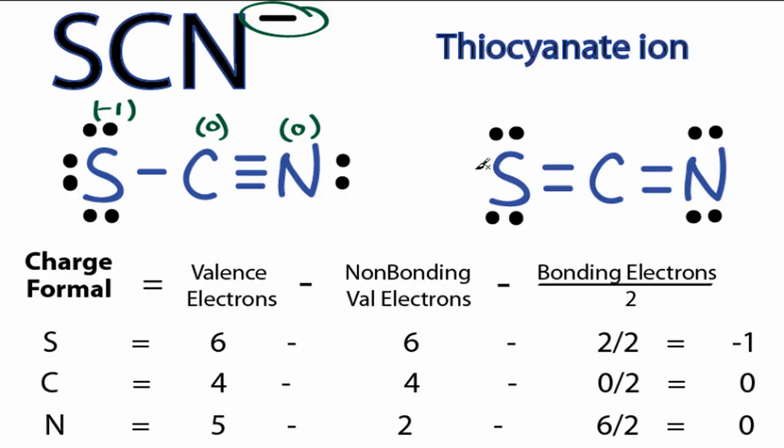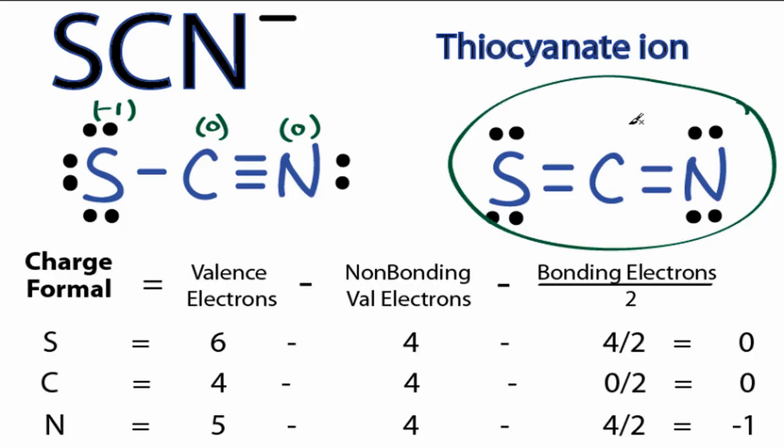Now let's look at the next Lewis structure here for SCN minus and calculate the formal charges. For this Lewis structure, we can see that the sulfur and the carbon both have formal charges of 0. The nitrogen on the periodic table is in group 5, so it has 5 valence electrons.